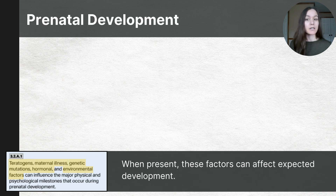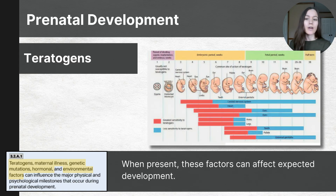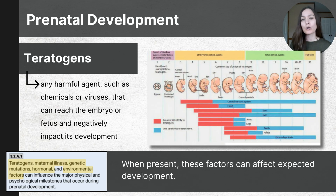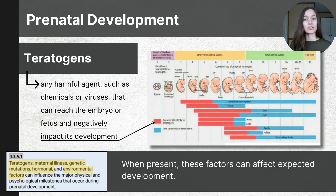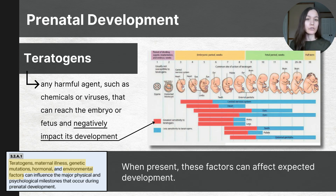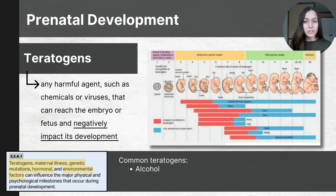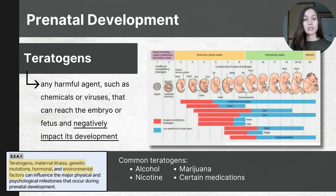Let me define that first concept because it might be one you're less familiar with: teratogens. Teratogens are a harmful agent, like a chemical or a virus, that can reach the embryo or fetus and negatively impact its development. When women receive prenatal care, their doctors inform them of common teratogens known to cause harm during prenatal development, such as alcoholic beverages, nicotine, marijuana, certain over-the-counter medications, prescription medications, and illegal substances.